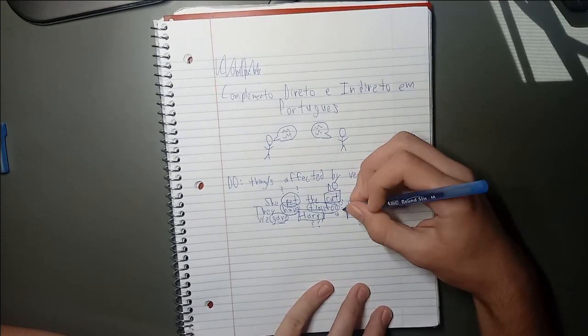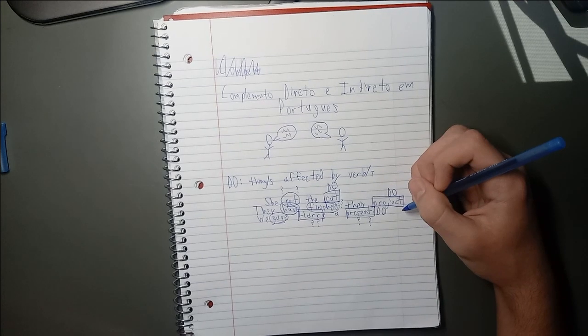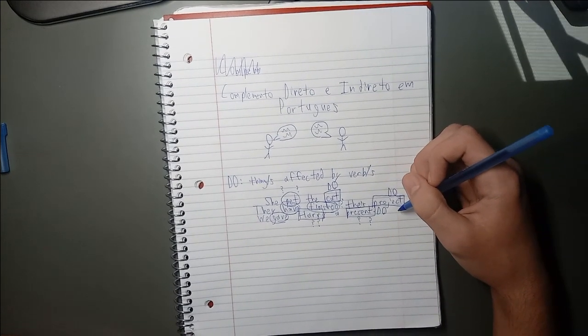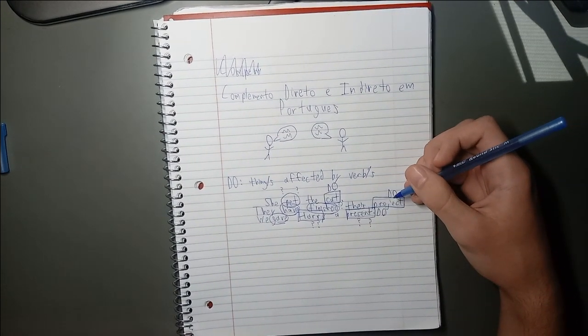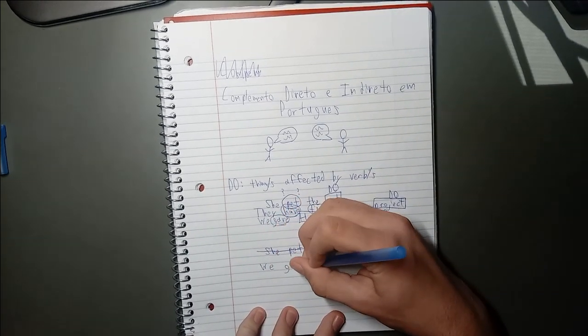But all is not lost. Just remember to ask yourself, what is being given? The answer is clear. It's the present. Harry isn't being given to anyone in this sentence.